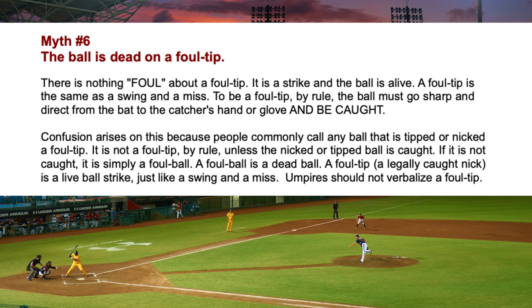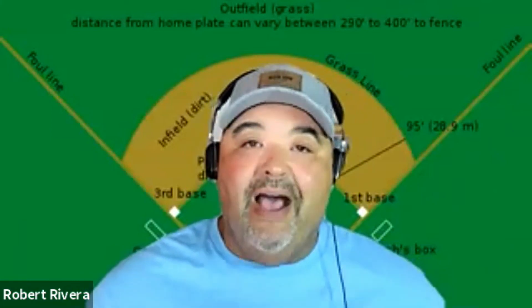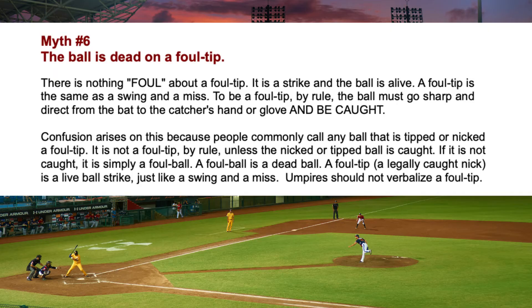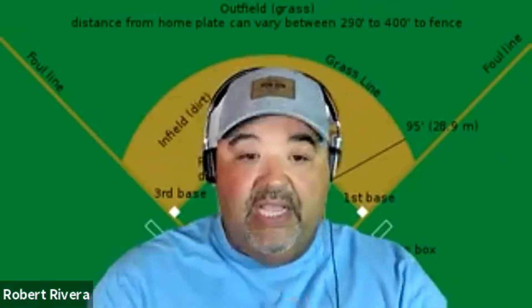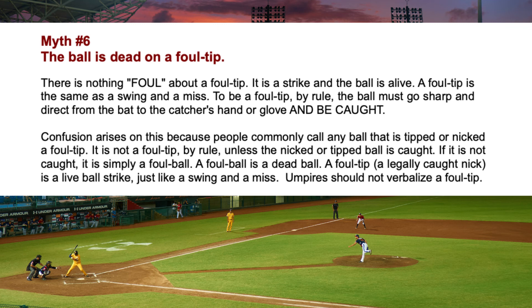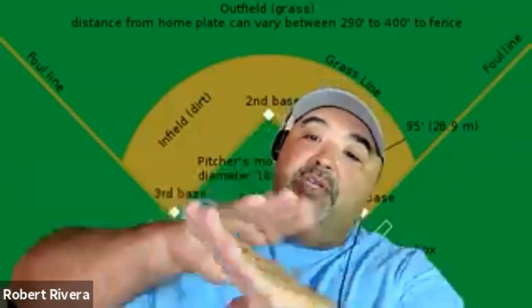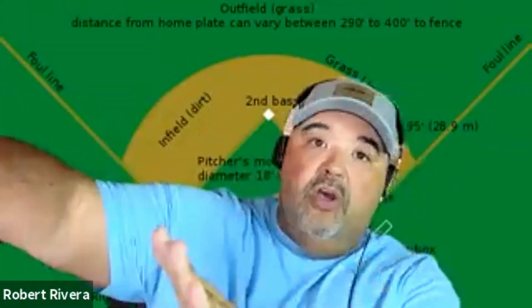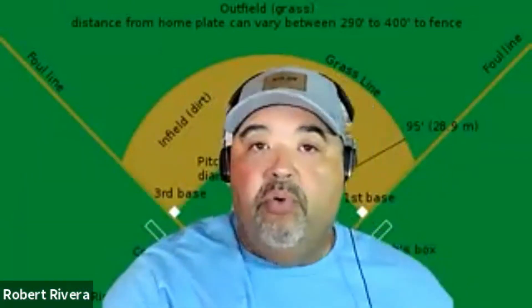Confusion arises because people commonly call any ball that is tipped or nicked a foul tip. It is not a foul tip by rule unless the tipped or nicked ball is caught. If it's not caught, it's simply a foul ball — a foul ball is a dead ball. The proper mechanic is to call time, not scream 'dead ball.' A foul tip is a legally caught nick — it's live, it's a strike, just like a swing or a miss. The umpire signal is sliding the fingers across the hand, then point to it: foul tip.